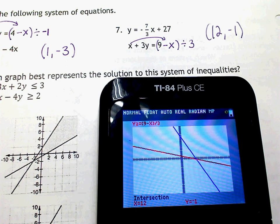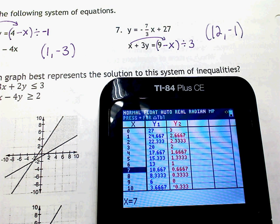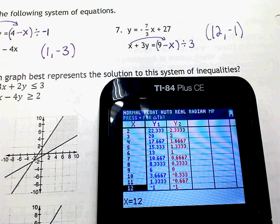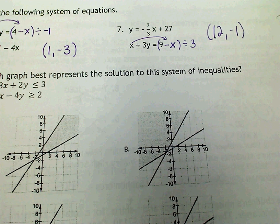We get our table. If we go down to 12, they show the same number. Yep, negative 1, negative 1. Thank you.